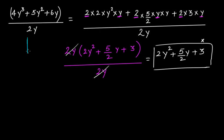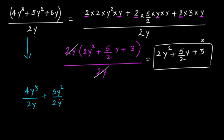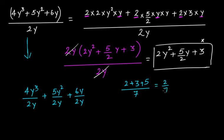Now let's divide by the method of monomial by monomial. This is 4y³ + 5y² + 6y, so this is basically 4y³ ÷ 2y + 5y² ÷ 2y + 6y ÷ 2y. Why? Because if you have (2 + 3 + 5) ÷ 7, that's equal to 2/7 + 3/7 + 5/7. Same thing we have done here.